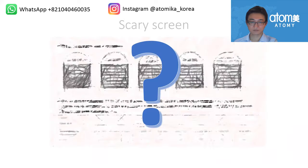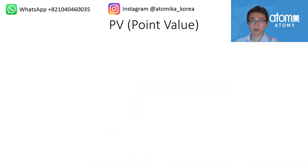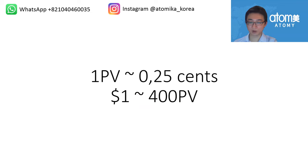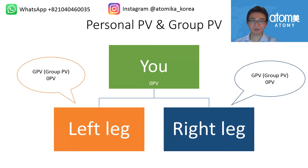First, let's speak about PV — point value. Every product has its own point value. For example, HemoHIM, the best-selling product on the American website, costs ninety-two dollars and gives 54,600 PV. That means one PV equals approximately $0.25, or one dollar is approximately 400 PV. This is a rough estimate because every product has its own PV and it varies.